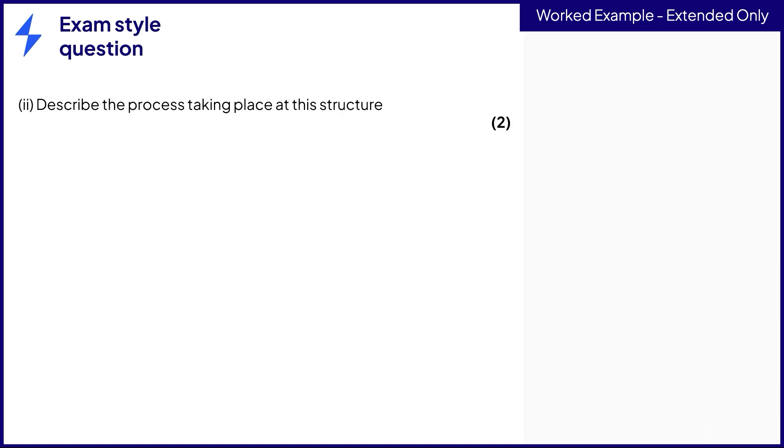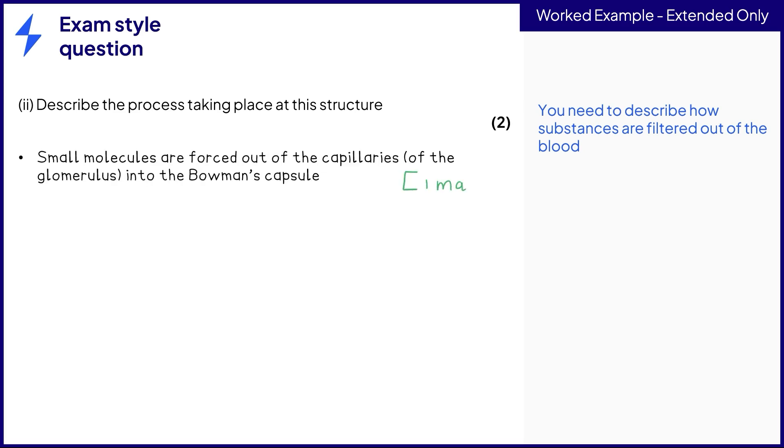We know that the first step in urine production involves filtering out the unwanted substances from the blood. Remember that all the small molecules that can fit through the openings in the capillary wall will leave the blood and move into the Bowman's capsule. This happens due to the high pressure that is present in the capillaries of the glomerulus.